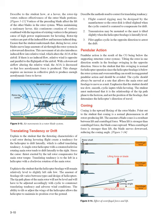Methods used to correct for translating tendency: 1. Flight control rigging may be designed so the rotor disc is tilted slightly when the cyclic control is centered to compensate for drift. 2. Transmission may be mounted so the mast is tilted slightly when the helicopter fuselage is laterally level. 3. Pilot applies cyclic in the opposite direction to arrest the drift. Pendular action is the result of the CG being below the supporting structure (rotor system). Tilting the rotor in one direction results in the fuselage swinging in the opposite direction. The cyclic should always be moved at a rate that allows the main rotor and fuselage to move as a unit — the student should use slow, smooth cyclic inputs while hovering. The student must understand that it is the relationship of the tip-path plane to the horizon, not the position of the fuselage, that determines the helicopter's direction of travel.